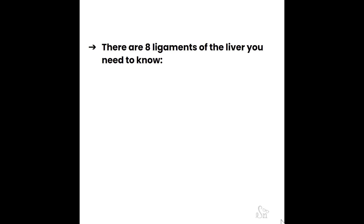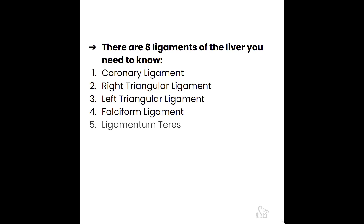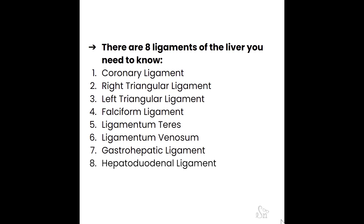The eight ligaments are: the coronary ligament, the right triangular ligament, the left triangular ligament, the falciform ligament, the ligamentum teres, the ligamentum venosum, the gastrohepatic ligament, and the hepatoduodenal ligament. We'll go step by step for each, showing where they are located in relationship to the liver and how they provide support.